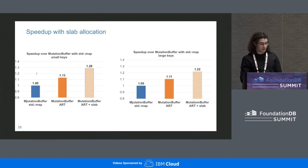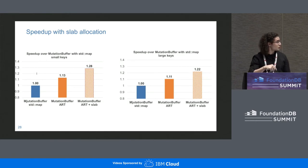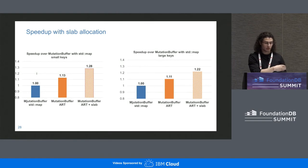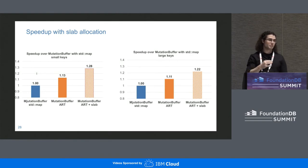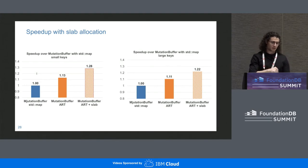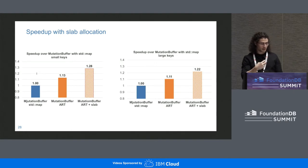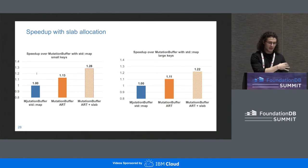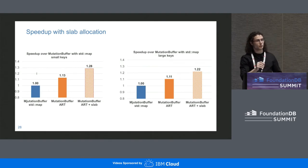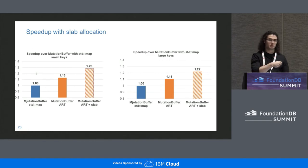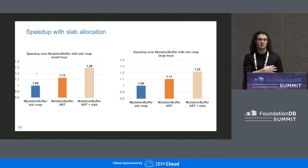The results show an additional column for both small keys and large keys — a dashed column representing the speedup when using both our ART data structure and slab allocation. The improvement over the baseline ranges from 22% to 28%. By using perf as an indicator of where overhead is, we could improve the performance of this part of FoundationDB by up to 28% over the baseline.